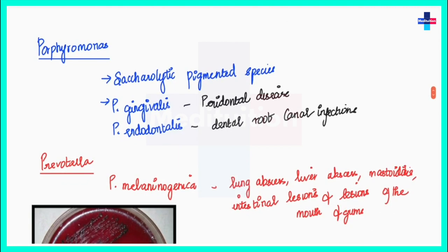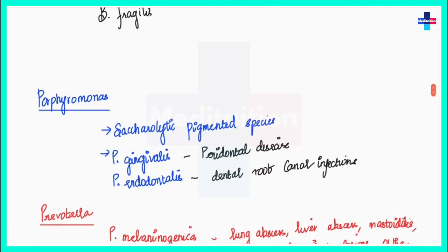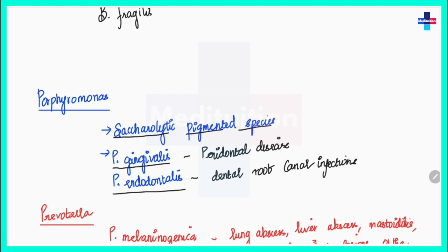The next microorganism is Porphyromonas. Porphyromonas is a sacrolytic pigmented species that was previously classified under Bacteroides but now has its own separate genus. In Porphyromonas we have two important organisms: Porphyromonas gingivalis and Porphyromonas endodontalis.